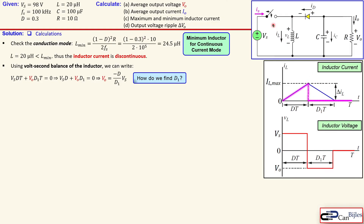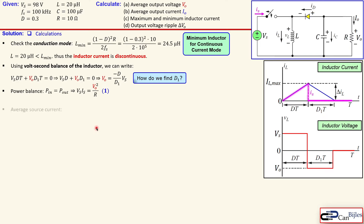We can use the source current waveform shown in pink to calculate the other parameters. In the ideal case, there is a power balance: power input equals power output. Power input is the DC voltage source Vs times the average source current Is, which equals the output power: output voltage squared over R. This is equation number one.